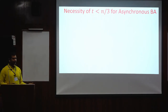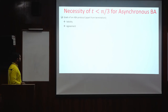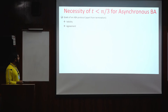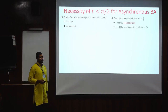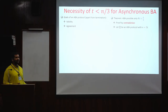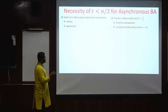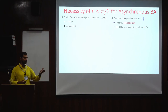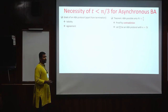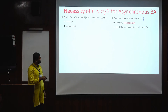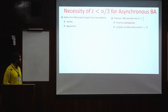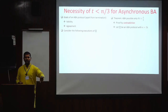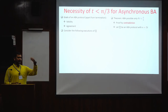Let me give a feel for why t < n/3 is necessary for asynchronous Byzantine agreement with only point-to-point channels. I want to prove that you cannot design an ABA protocol tolerating more than n/3 corruptions. For contradiction, assume you have some arbitrary protocol pi that solves Byzantine agreement in the asynchronous setting with n = 3t parties. We will consider three different executions of pi and derive a contradiction showing some property is violated.